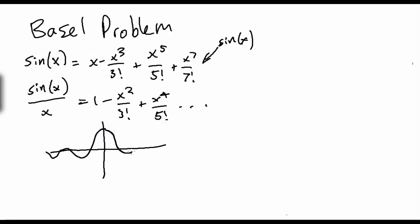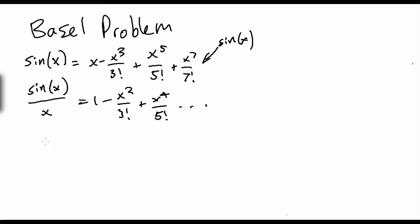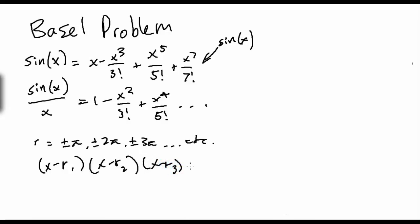The graph of sine x over x looks something like this. The roots are at π, 2π, 3π, negative π, negative 2π, et cetera. So the roots are r equals plus or minus π, plus or minus 2π, plus or minus 3π, and so on. Usually, if you have a polynomial, you would express it in terms of its roots as (x − r₁)(x − r₂)(x − r₃) etc. equals zero. That's what we're going to do here.